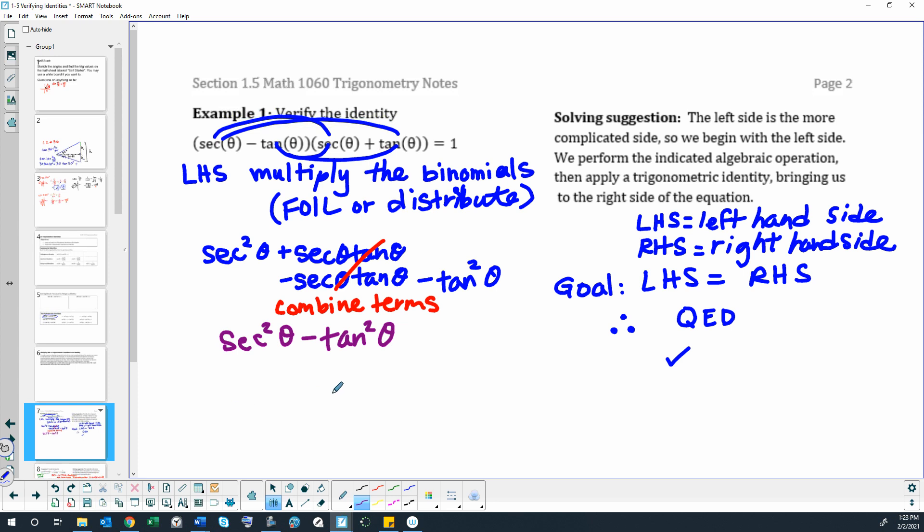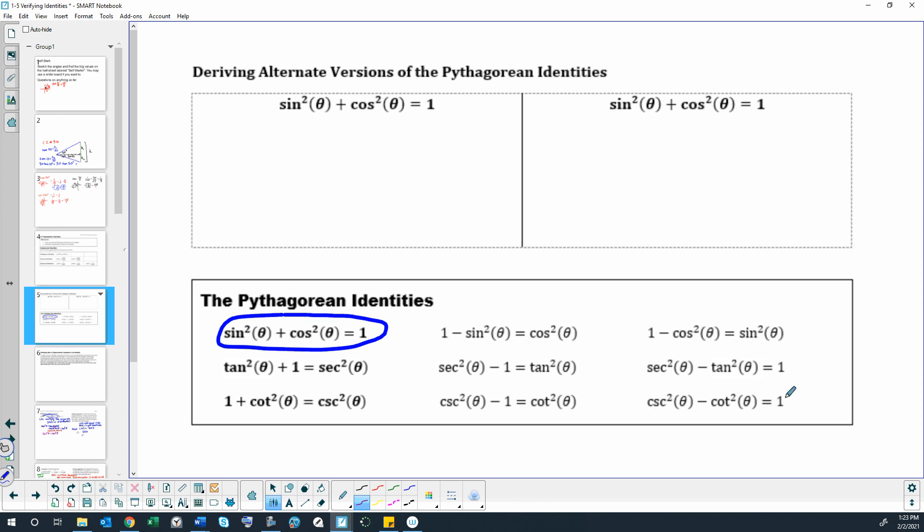We could spend a bunch of time proving that this is the Pythagorean identity sine squared plus cosine squared equals one. Or we can just go back to what we did earlier and look at this list of Pythagorean identities where we've taken the basic identity and changed it by dividing out one of the trig ratios or changed it by moving things around. So notice we've got this version of the Pythagorean identity right there. And it equals one.